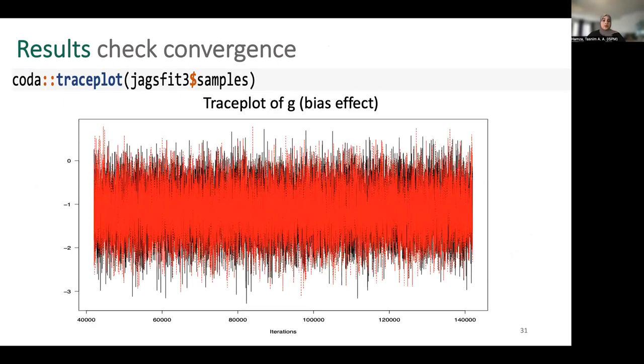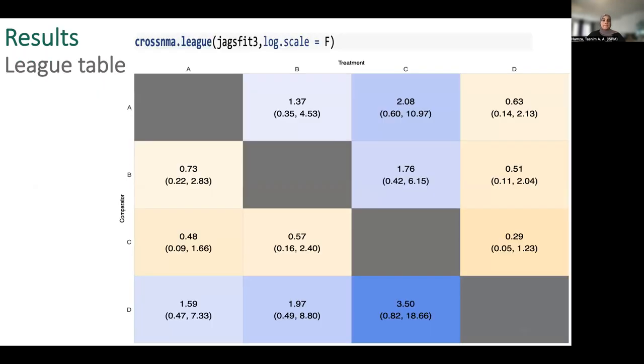You could also produce the trace plot to check convergence of each parameter. And finally, you can create the league table by cross NMA league function. Here, the values in each cell show the relative treatment effects and the 95% credible interval of each treatment on top compared to the treatment on the left.